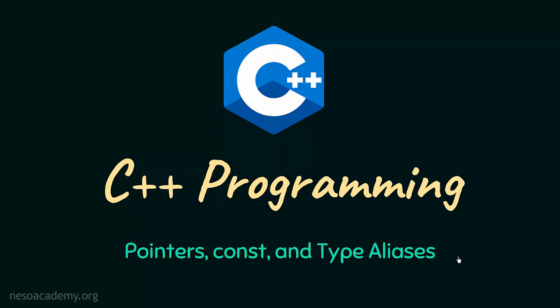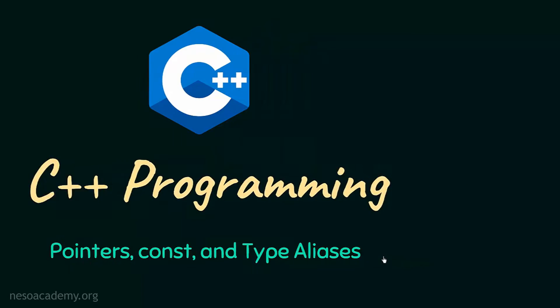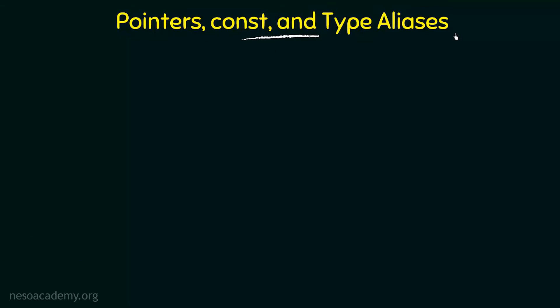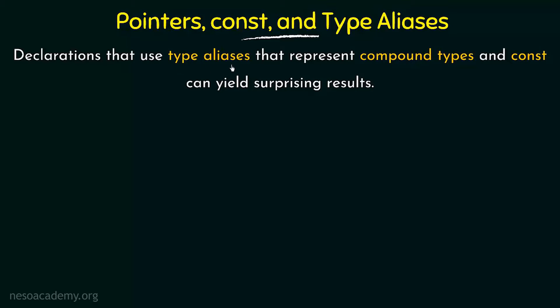In this video we will discuss pointers, constants, and type aliases. In the previous lecture we studied type aliases and what they are used for, and in former lectures we talked about pointers, the const keyword, and what it is used for. In this lecture we will see a combination of all these. Declarations that use type aliases representing compound types and const can yield surprising results.